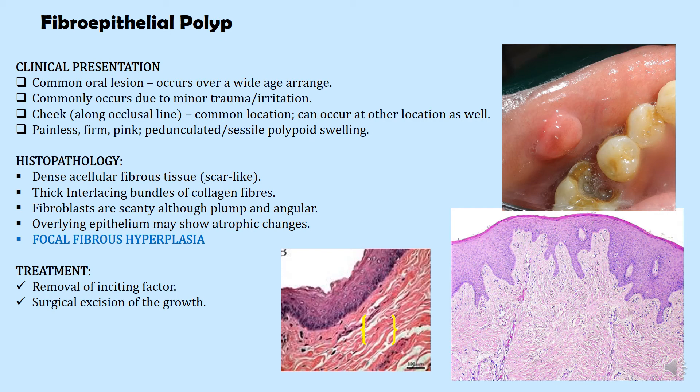Microscopically, fibroepithelial polyp shows dense acellular fibrous tissue — similar to scar tissue — with thick interlacing bundles of collagen fibers. Fibroblasts are scant although plump and angular, and the overlying epithelium may show atrophic changes. In this histological slide, the epithelium is normal with a large amount of fibroblasts and collagen bundles visible. Treatment is surgical excision and removal of the causative factor, such as the sharp edge of the tooth.